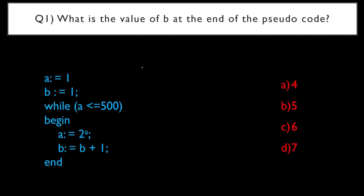We'll keep a variable a and put a value of 1, and a variable b with a value of 1 — that is what has been initialized. This while loop begins and ends here. The begin sign means the while loop starts here. While the value of a is less than or equal to 500, this loop will be executed.